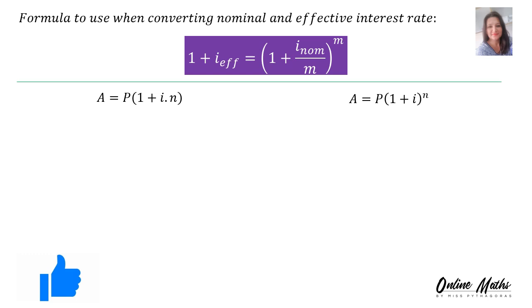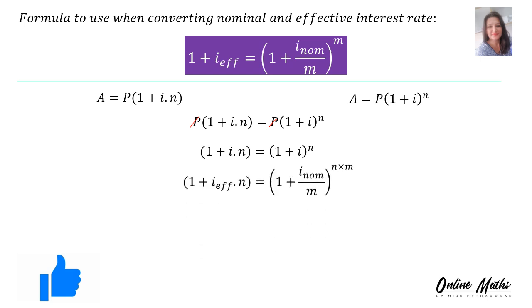Since both equations are equal to A, we can equate them. P and P cancel, and you're left with: 1 plus I times N equals 1 plus I to the power of N. On the left-hand side, you label the I as I-EFF (effective), and on the right-hand side you change the I to I-nominal. When dealing with compounded interest — quarterly, monthly, half-yearly — you always adjust your I by dividing by M, and multiply your N by M.